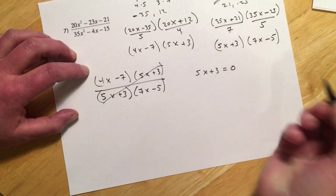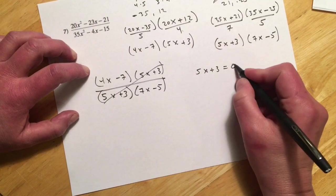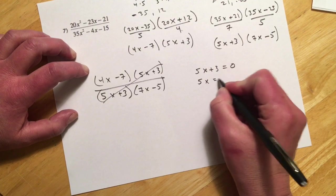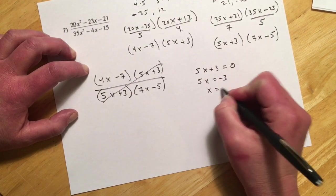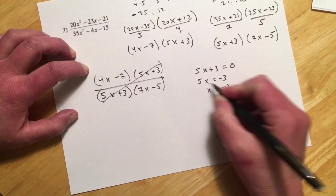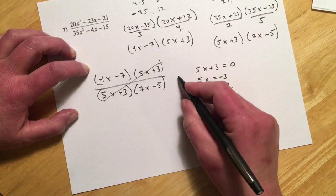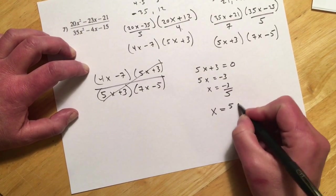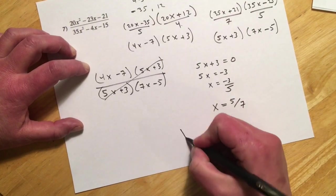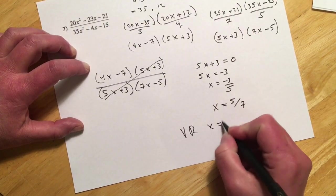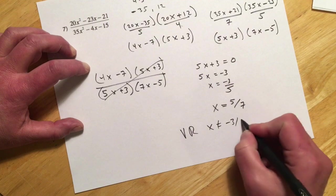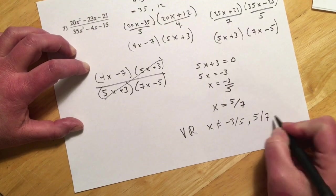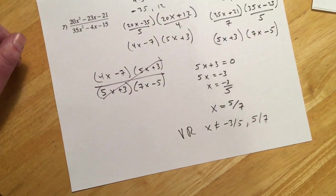Here's how I'm getting those, is I'm physically setting that to 0, and scooting the 3 over, and then dividing out the 5. And then if you do the same thing with this one, you're bringing the 5 over, divide the 7, so that's how I'm getting x equals 5 sevenths. So my restrictions would be x can't be those two numbers, because those would make this denominator 0.